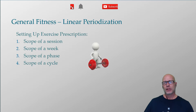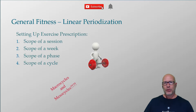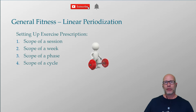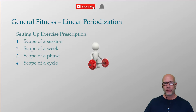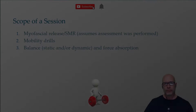When you're learning about periodization in textbooks, they use terms that many people find confusing, such as macrocycles, mesocycles, microcycles, undulating, conjugate, and things like that. What I like to do instead is explain how to set up the session itself, how that session fits into the scope of a week, how that week fits into the scope of a phase, and how that phase fits into the scope of a cycle.